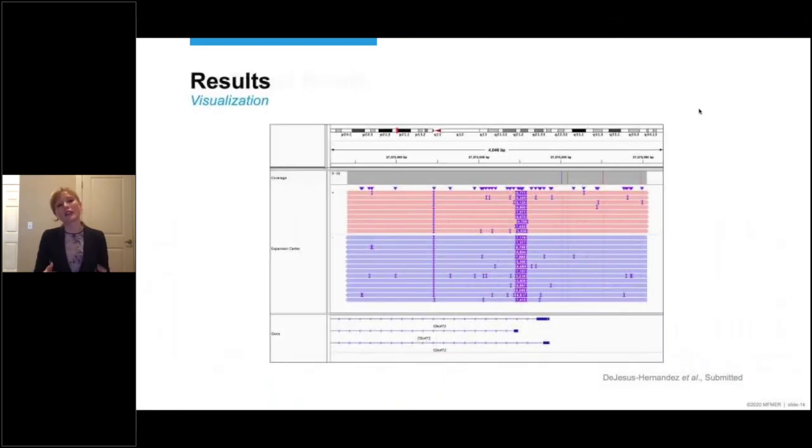We also visualized it using IGV, as shown on this slide. And again, it is the C9ORF72 locus. The expansion itself is shown in purple. And the number of reads is specified as white numbers. And you can see that the expansion is located either in the first intron or in the promoter region, depending on the transcript studied. And again, that is exactly what we wanted to see.